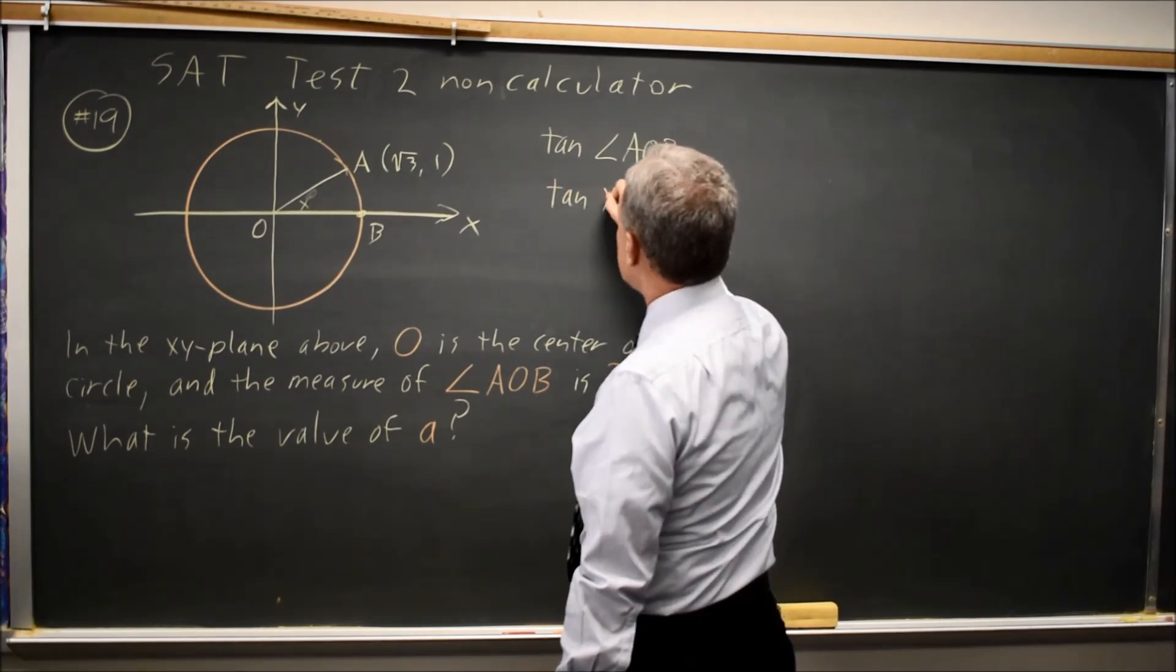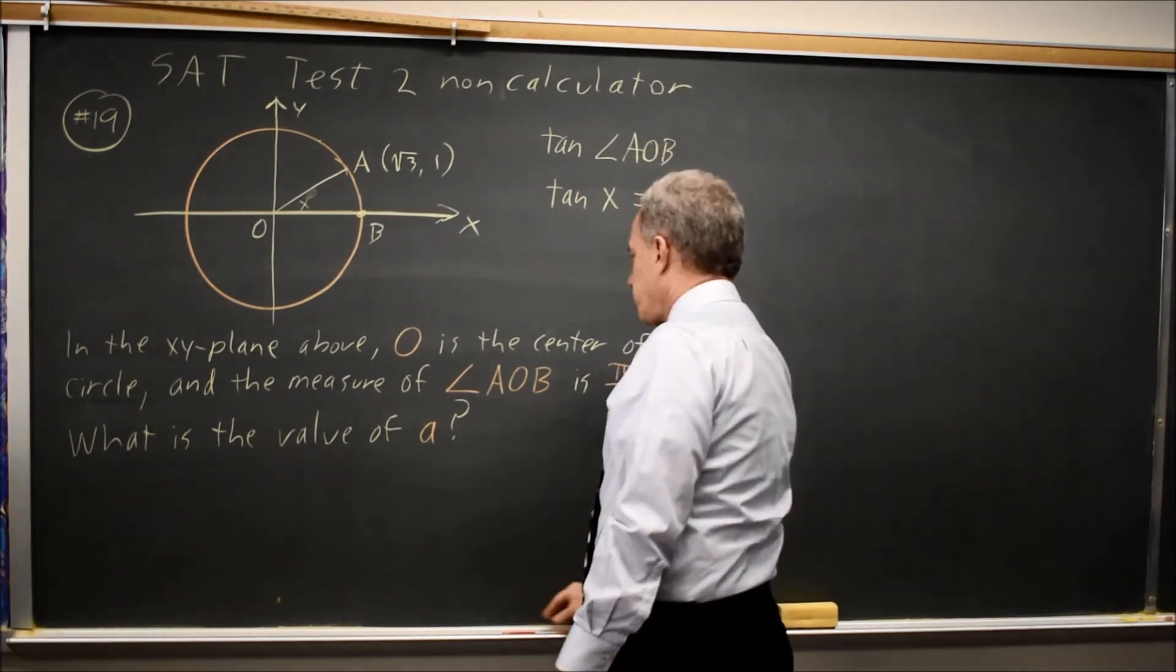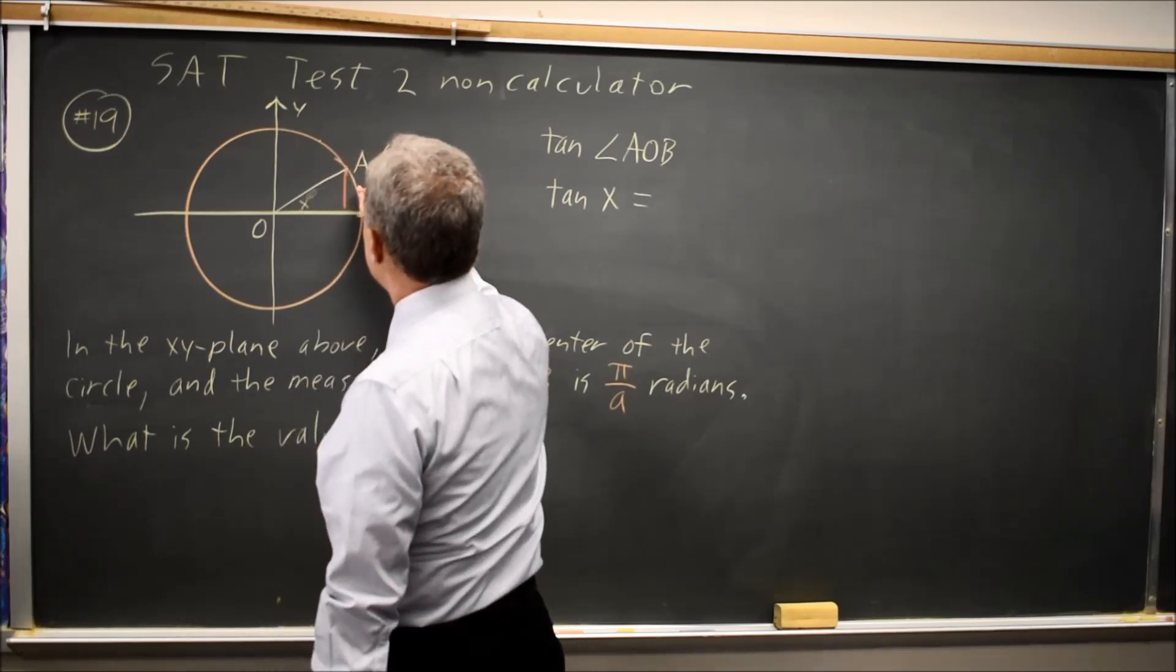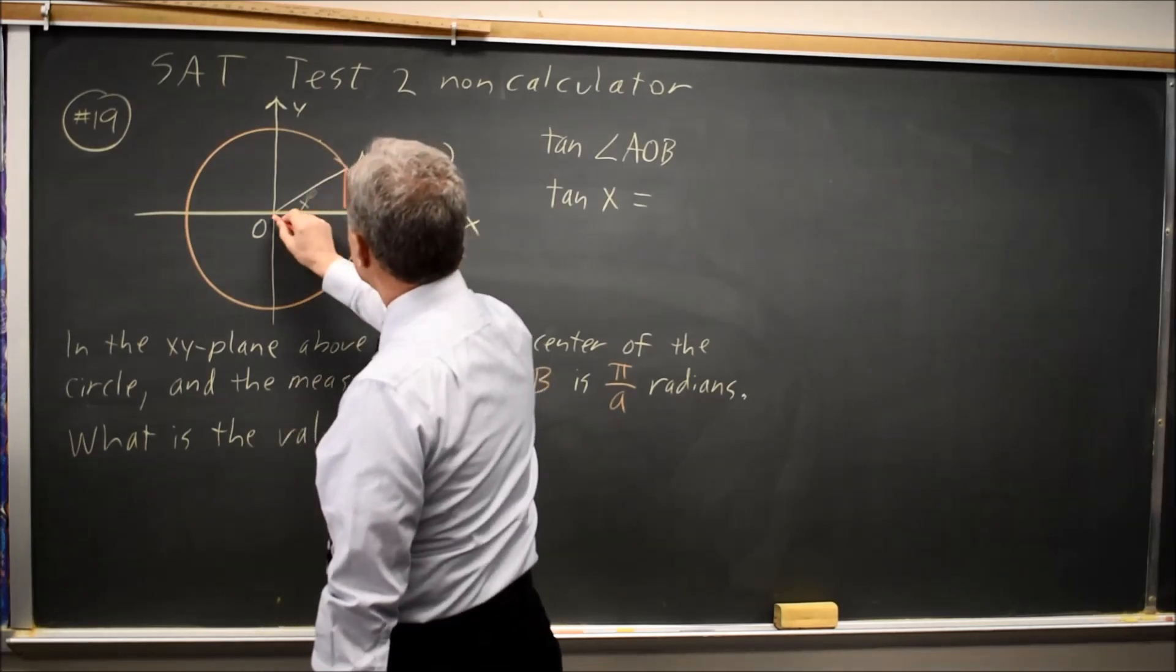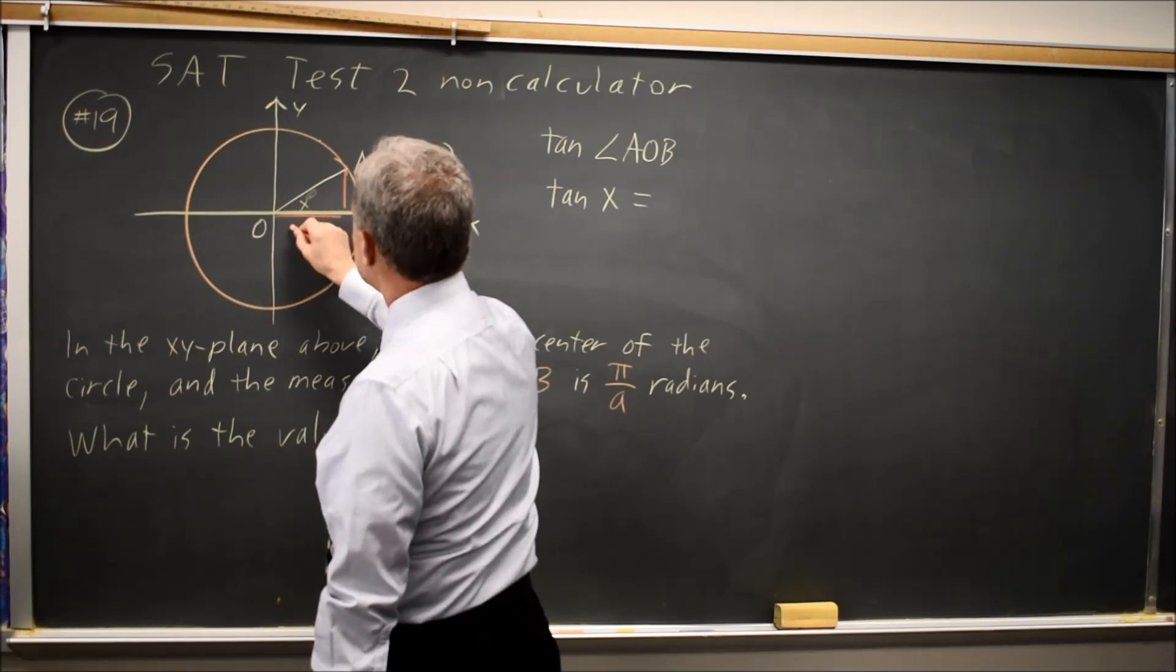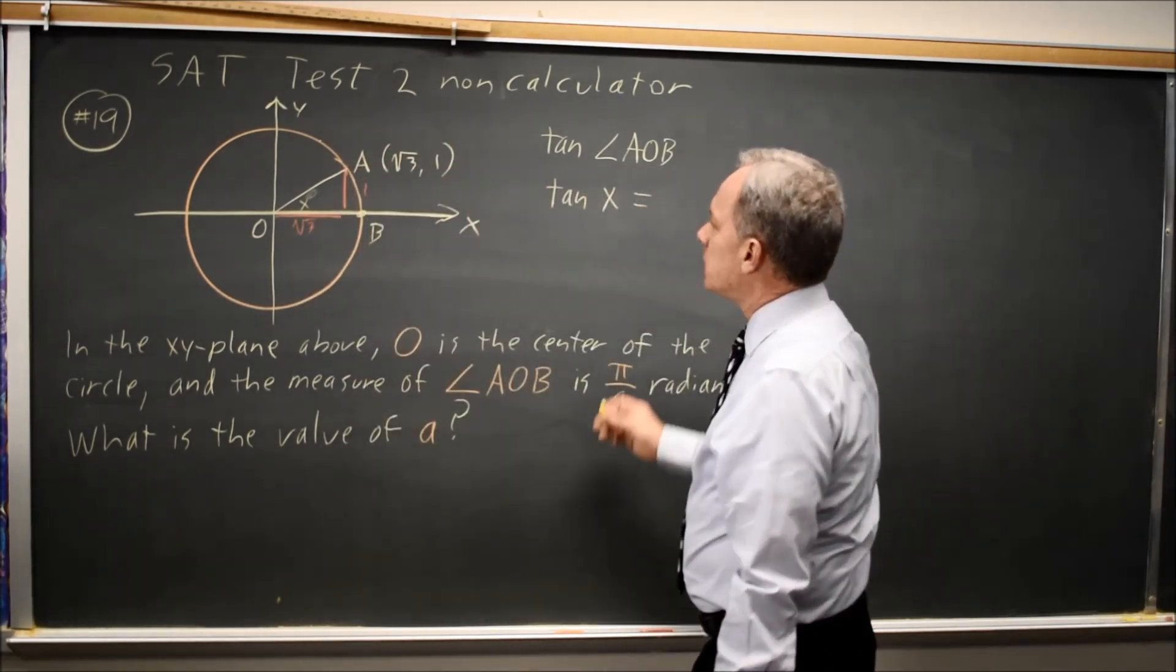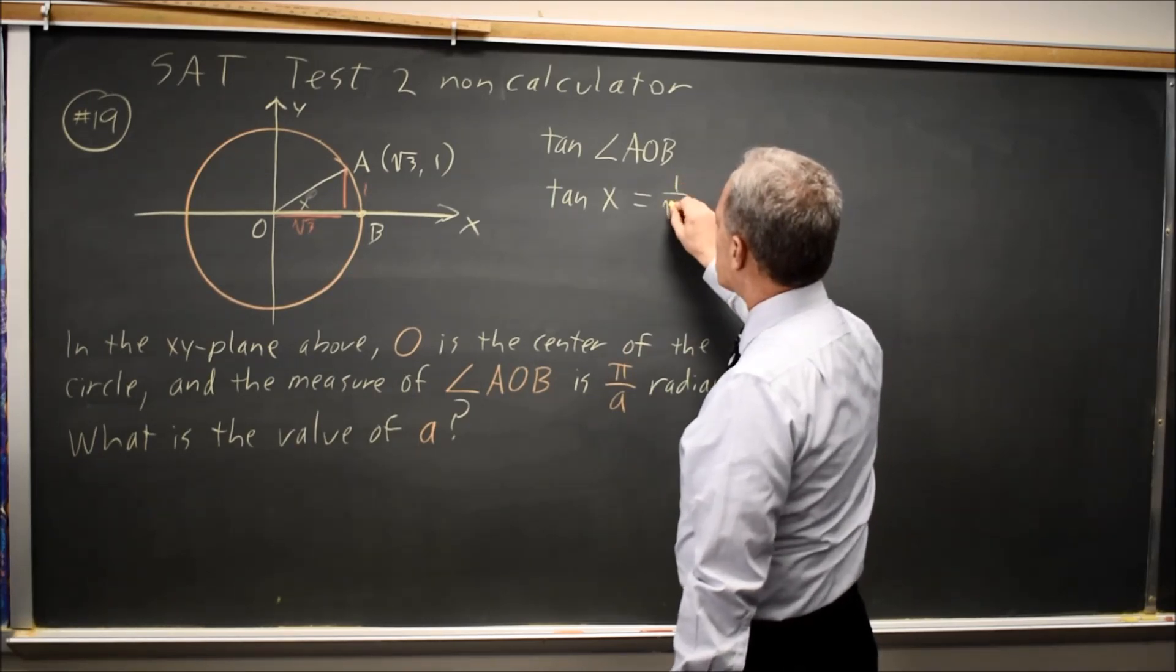Tangent of X is equal to the opposite side, which is the Y value, over the adjacent side, which is the X value. So that gives me the tangent is 1 over root 3.